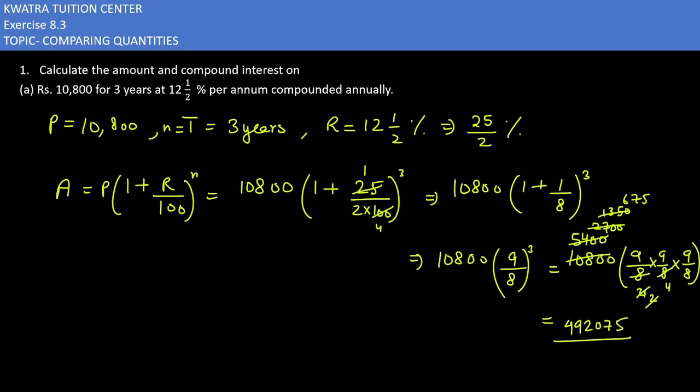And in denominator you have 4 into 8. 4 into 8 is 32. Now what you have to do next is divide this. When you divide you will get a value of 15377.34. So this is the amount you will get after 3 years.